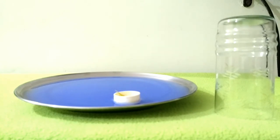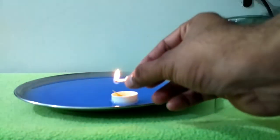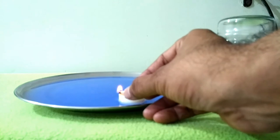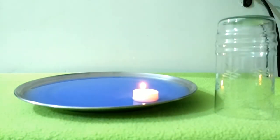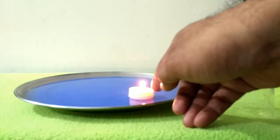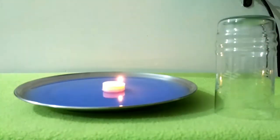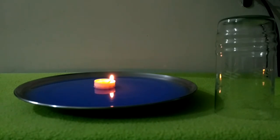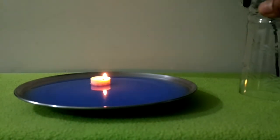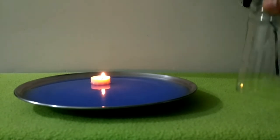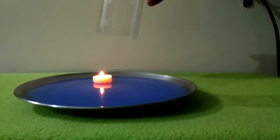So we light this lamp first. Okay, now you can see the lamp is lit. You need to watch very clearly what will happen once I put this glass upside down over the flame.